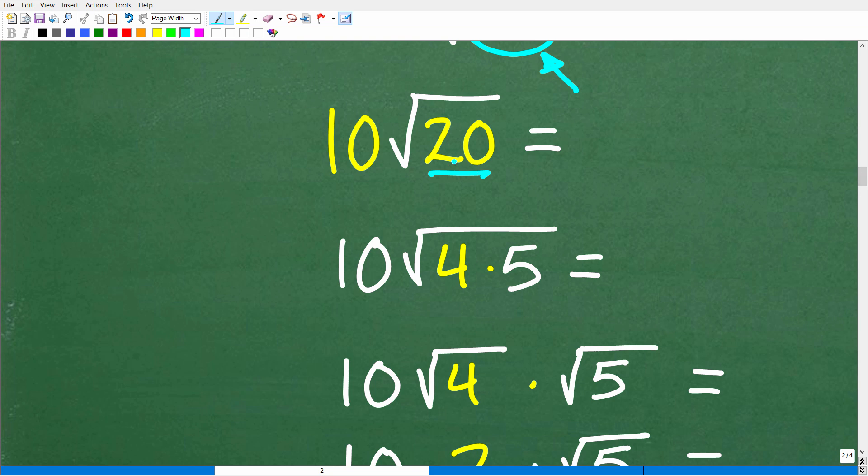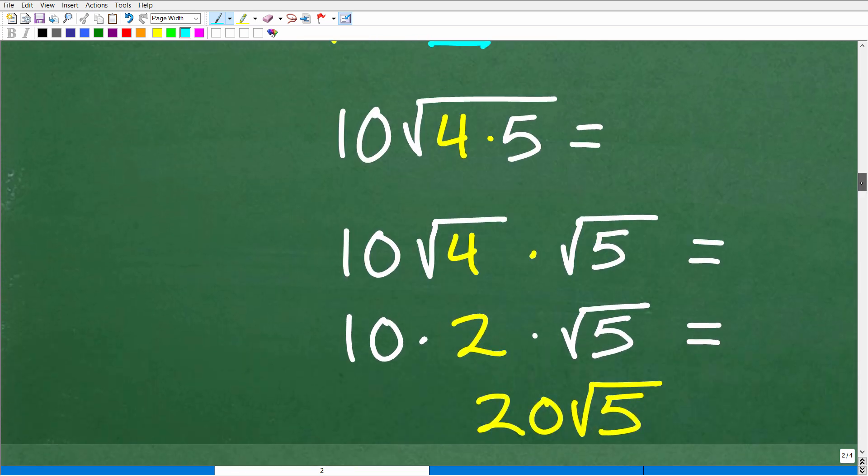So you're going to have to kind of continue to simplify. So don't stop once you've kind of simplified with just using one perfect square factor. Make sure your final square root has no more perfect squares in it. So 20, we can write as the square root of 20, we can write as the square root of 4 times 5. And now we're going to go ahead and continue on the same way.